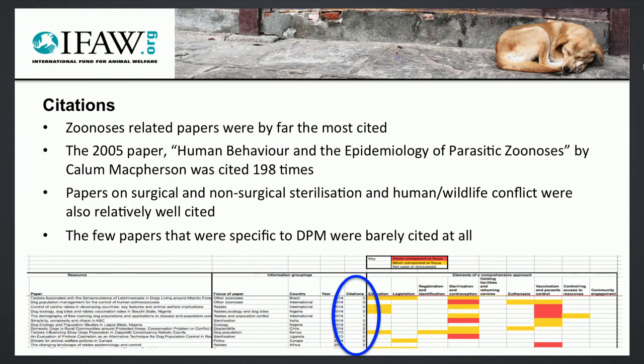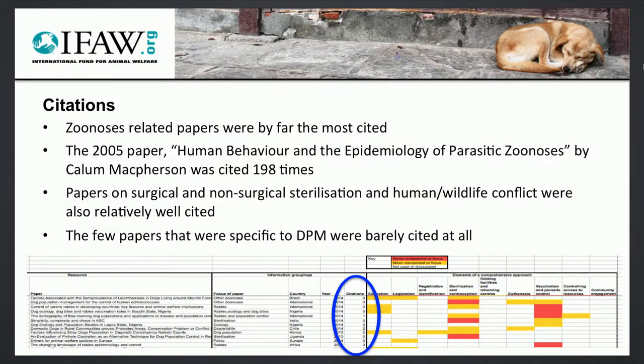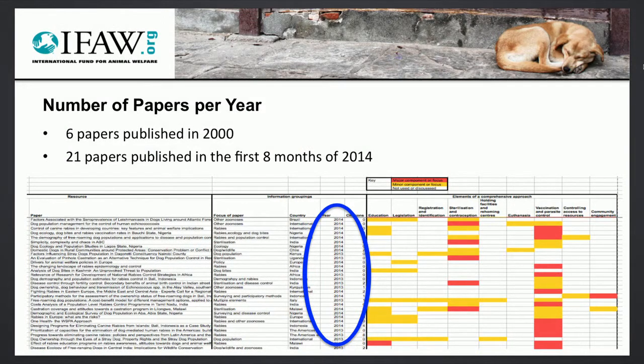Papers on zoonoses were the most cited, and one paper in particular — 'Human Behaviour and the Epidemiology of Parasitic Zoonoses' — was cited 198 times. So apparently if you only read one paper on the epidemiology of parasitic zoonoses this year, make sure it's this one. Or don't. Papers on sterilization and human-wildlife conflict were also fairly well cited. But the few papers that were purely on dog population management were barely cited at all. We also acknowledged that the amount of research being published was increasing year on year — with six papers back in 2000, to 21 in the first eight months of 2014. And remember, these papers are specifically regarding elements of a comprehensive approach; there are obviously many other papers on behaviour and population dynamics that were excluded because they weren't relevant to the results we were looking for.